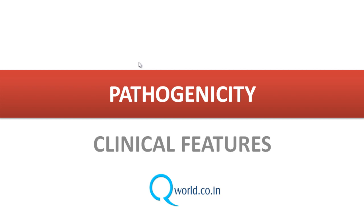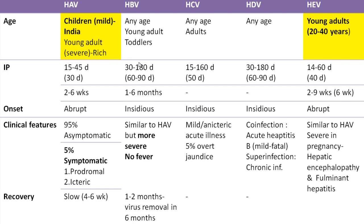Regarding clinical features by age: hepatitis B, C, and D can happen at any age as they are parenterally, sexually, and vertically transmitted. Hepatitis A is the most common cause of acute hepatitis in children in India; in western countries, young adults develop hepatitis A. In children the infection is usually mild, but in adults it is very severe. Hepatitis E is the most common cause of acute sporadic hepatitis in young adults aged 20–40 years.